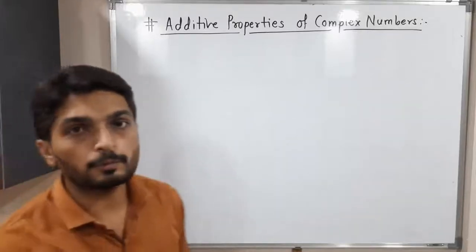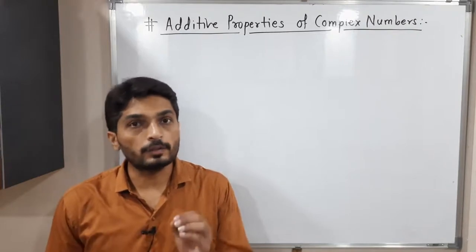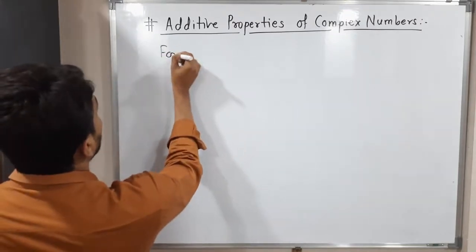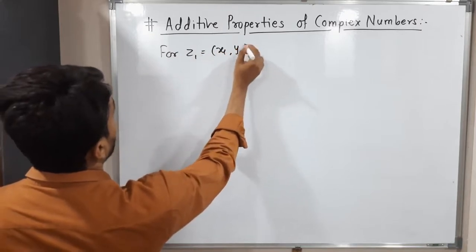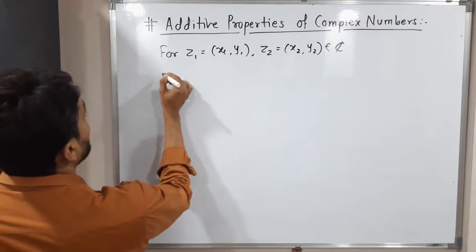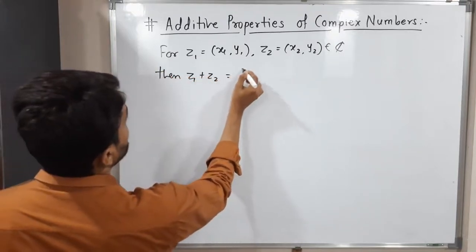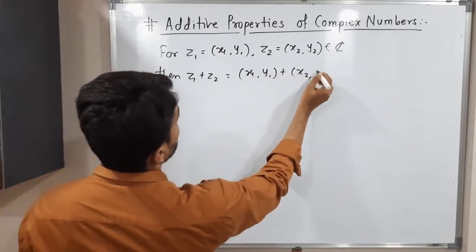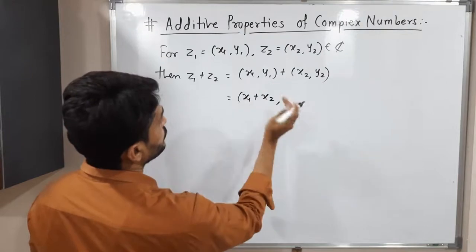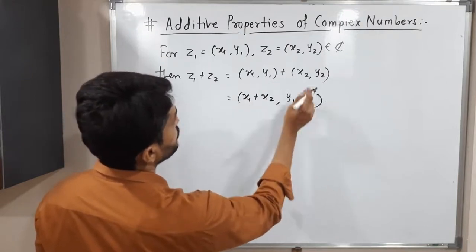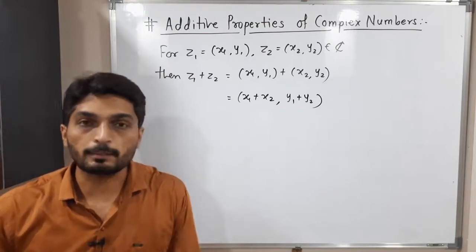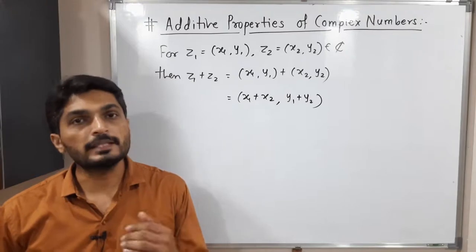Hi everyone, let us discuss additive properties of complex numbers. In the previous video we have already seen how to add two complex numbers. Let us recall the definition and then we will go further. For two complex numbers Z1 = (X1, Y1) and Z2 = (X2, Y2), Z1 plus Z2 equals (X1 + X2, Y1 + Y2) — we add component-wise. Addition of complex numbers satisfies certain properties, so let us discuss all those properties one by one with short proofs.